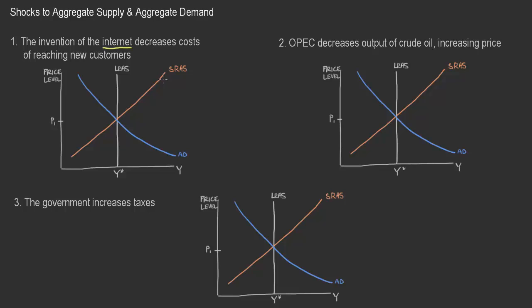So in the short run, when this is first beginning, we would see a shift to the right. I'll mark it here in yellow — we would see this kind of short-run aggregate supply curve shift to the right. The result of this short-term shift would be an increase in output. We would move to a new point in output, so we would see a real increase in GDP because of this improvement.